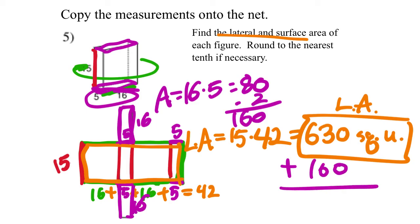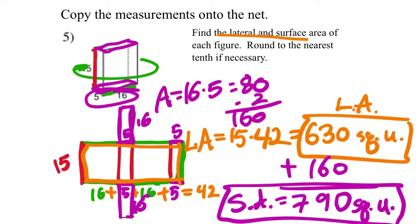And what do we get? 790 square units. So this would be the total surface area. I'm just going to write SA, surface area, total surface area if you want. And those are the two answers we need on this.